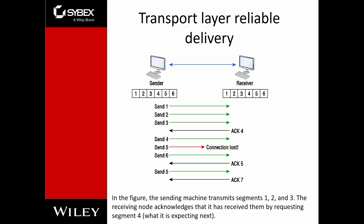Transport layer reliable delivery allows for better error correction. We may receive an acknowledgement for packets four and six, but if we lose packet five, the acknowledgement can specifically say: we received four and six, resend five. Then it will resend five and receive a final acknowledgement.